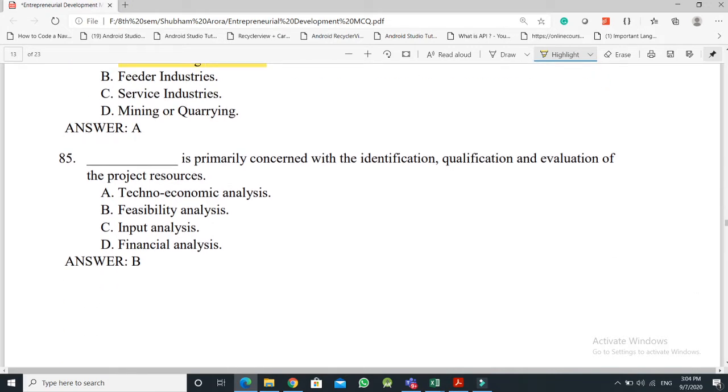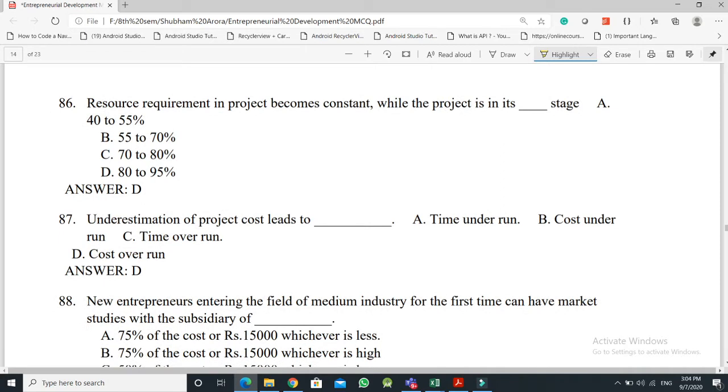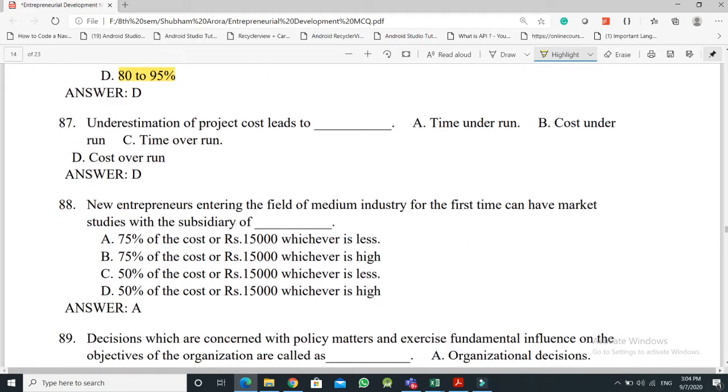Question No. 85: This is primarily concerned with identification, qualification and evaluation of the project resources - the answer is Option B, feasibility analysis. Question No. 86: Resource requirement in the project becomes constant while the project is in its which state - the answer is Option D, 80 to 95%. Question No. 87: Underestimation of the project cost leads to - the answer is Option D, Cost Overrun.